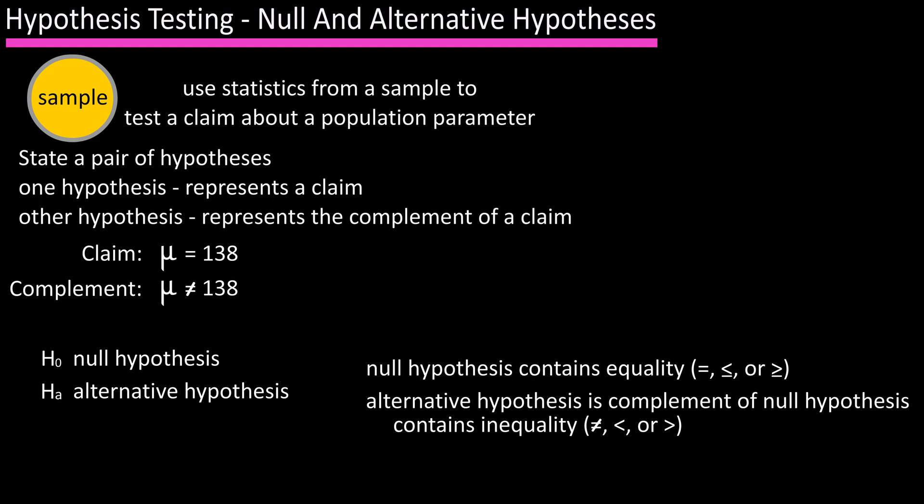So in our example, Smart Alex's claim of mu equals 138 is the null hypothesis H sub zero because it contains the equal sign, a statement of equality.